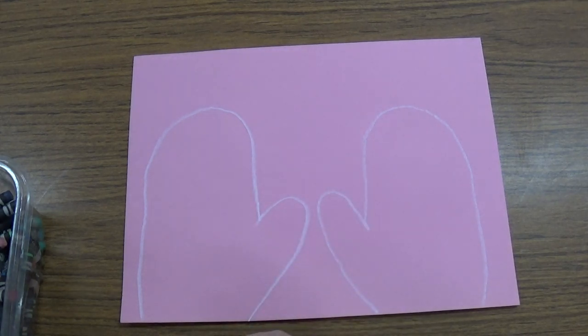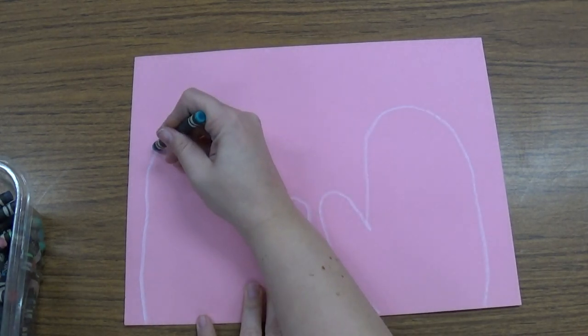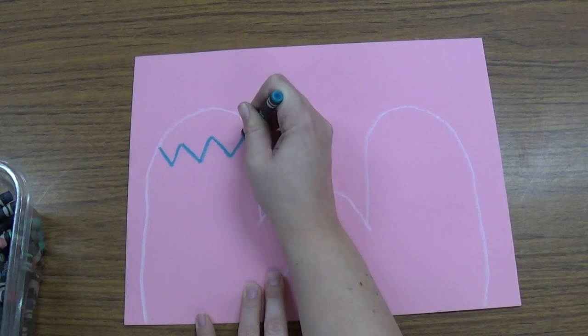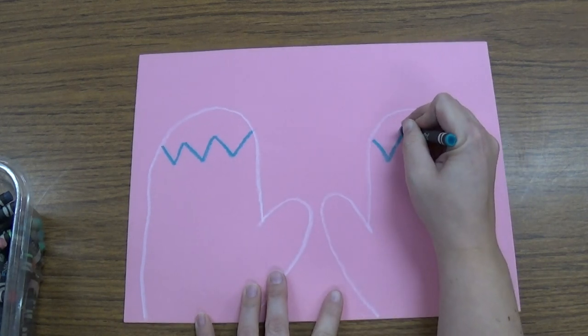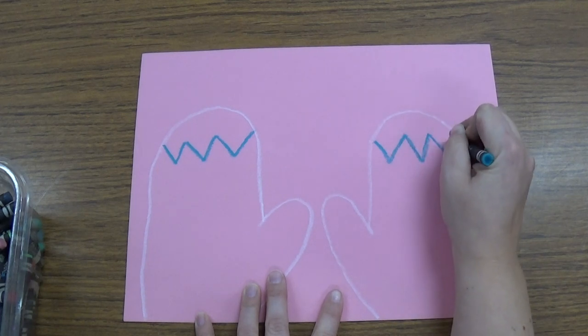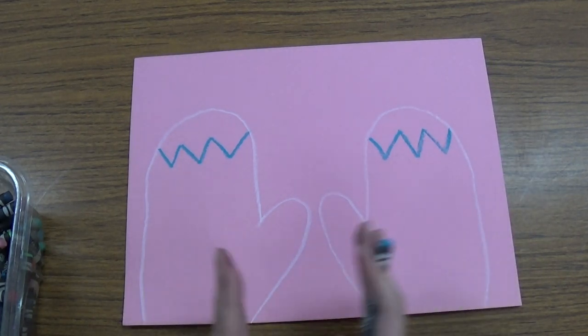So if I draw a zigzag line on this mitten, I'm going to do the same thing in the same spot on this mitten. Because our mittens are going to match, they're going to be symmetrical.